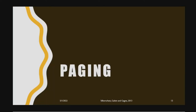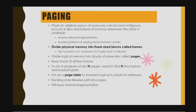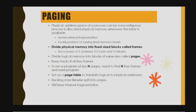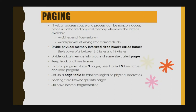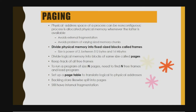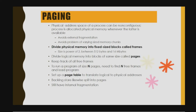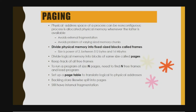That's all for segmentation. The next part is about paging. In paging, the physical address space of a process can be non-contiguous, and a process is allocated in physical memory whenever memory is available. This avoids external fragmentation — we already learned about internal and external fragmentation — and avoids the problem of varying-size memory. Physical memory is divided into fixed-size blocks called frames.